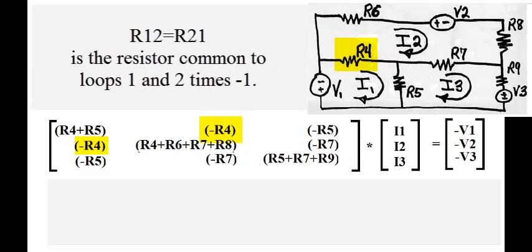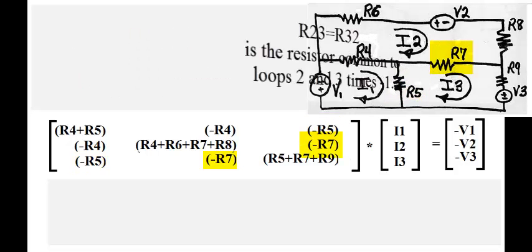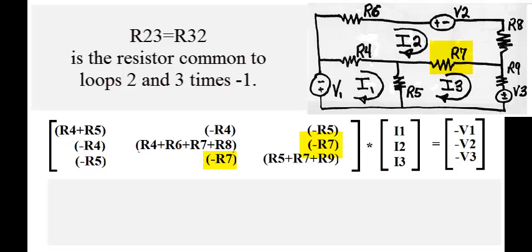R1,2 equals R2,1 is the resistor common to loops 1 and 2 times minus 1. R1,3 equals R3,1 is the resistor common to loops 1 and 3 times negative 1. R2,3 equals R3,2 is the resistor common to loops 2 and 3 times negative 1.